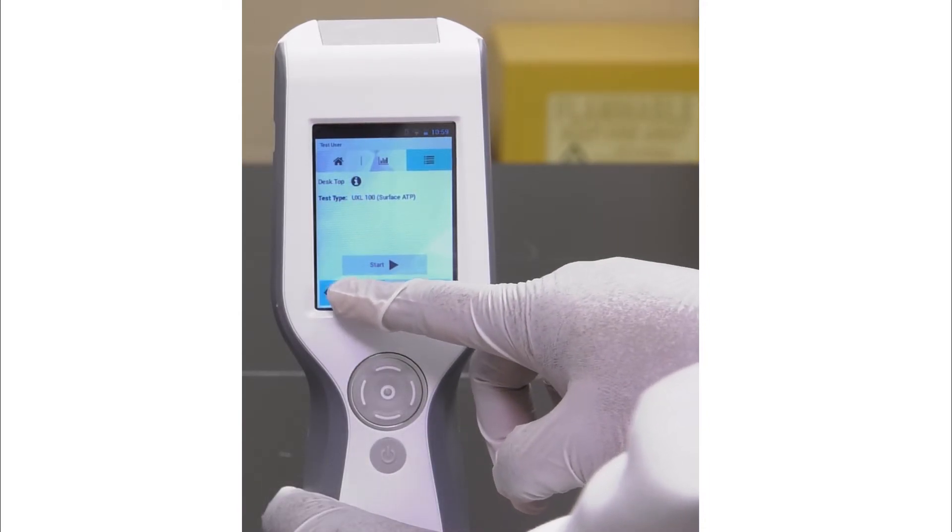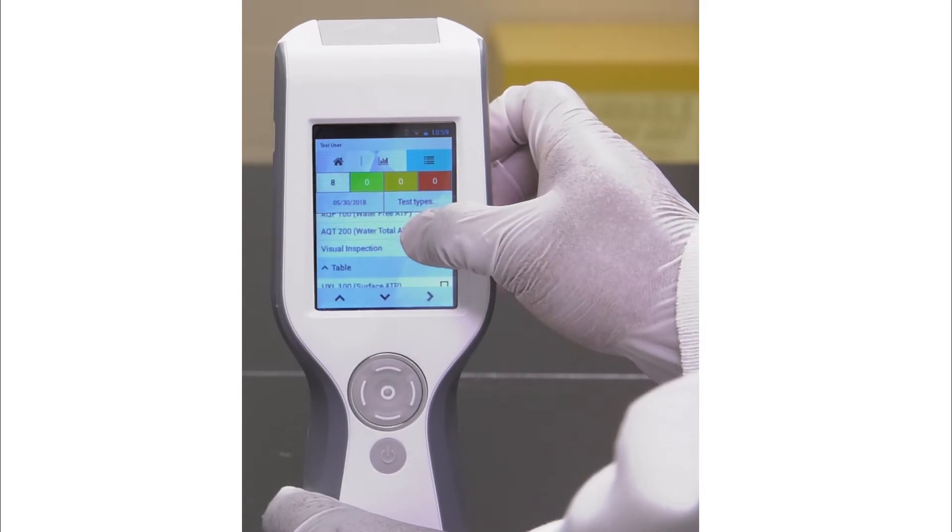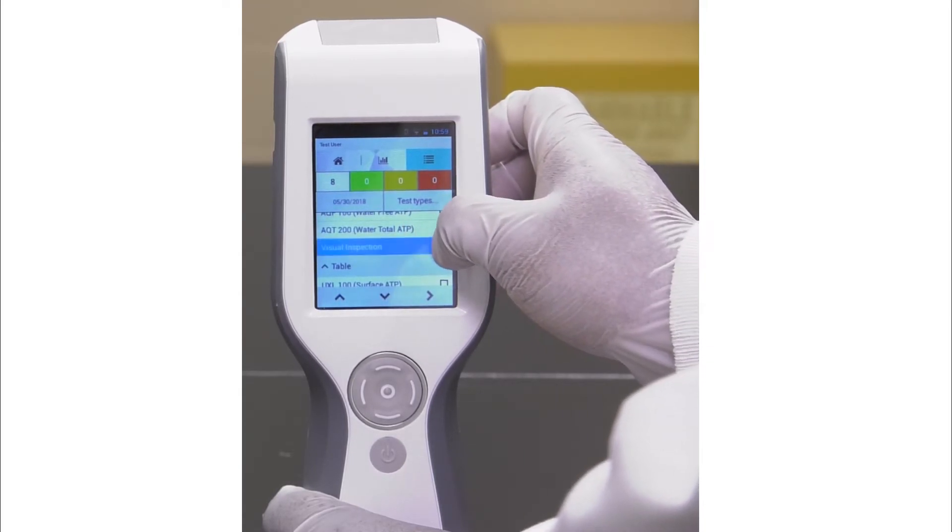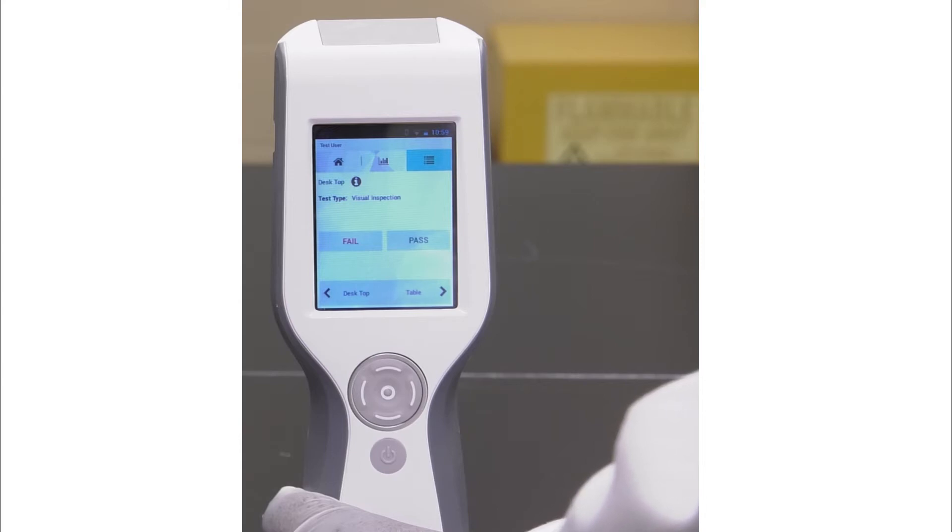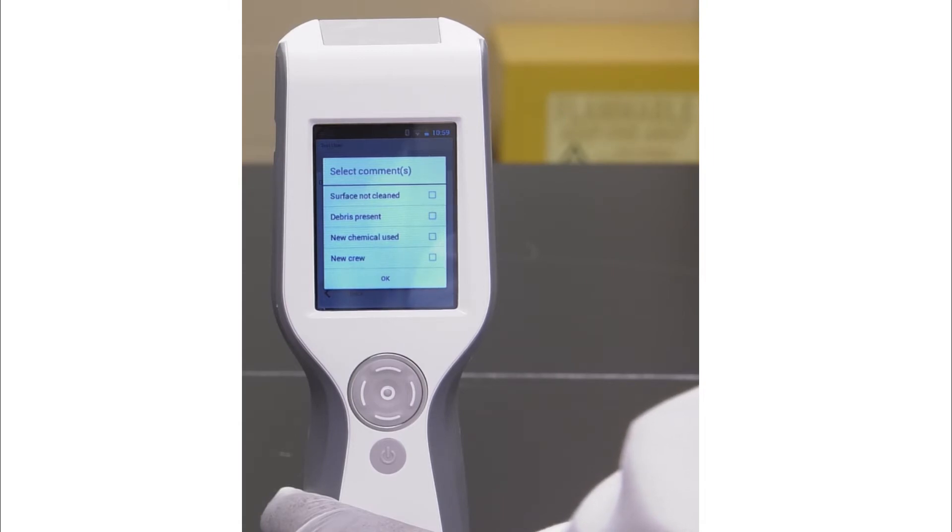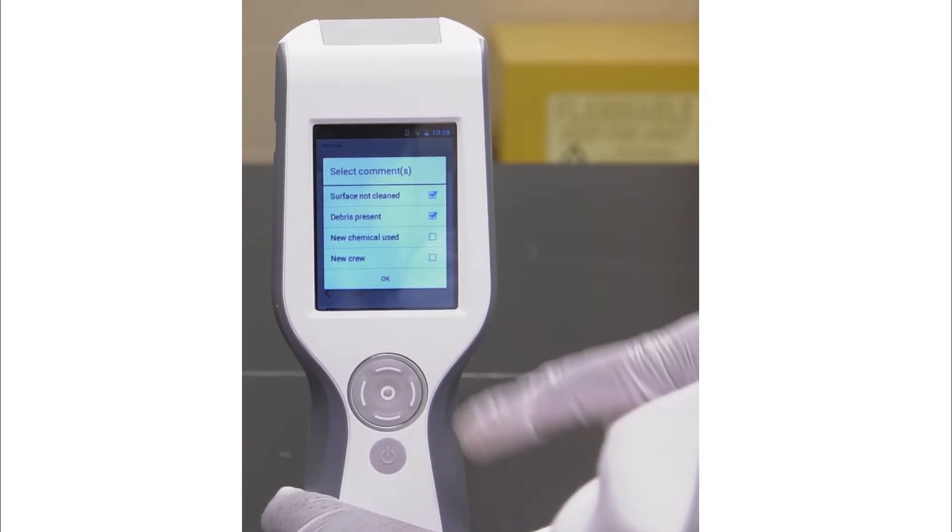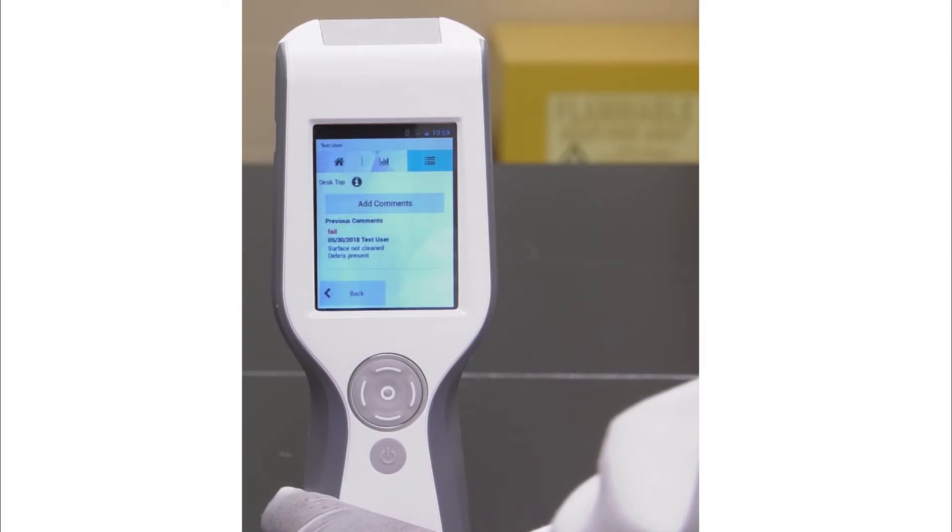Other types of tests can also be performed. For example, visual inspection. For visual inspection test types, select visual inspection. After evaluation of the surface, select the appropriate result. For example, fail. You may also press the add comments icon and tap any comments that apply, such as surface not cleaned and debris present. Comments are preset from within the software. Then click OK.